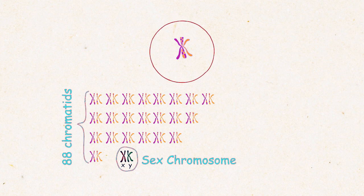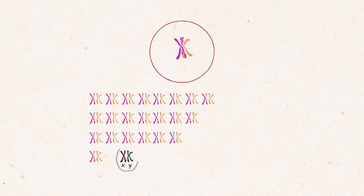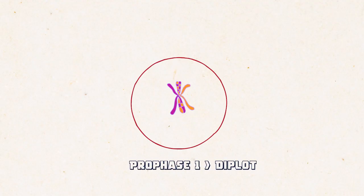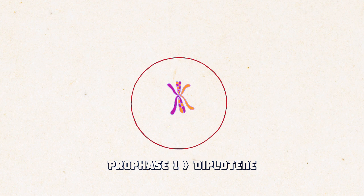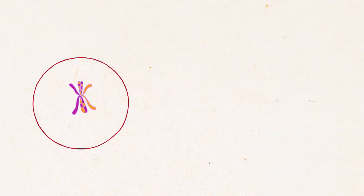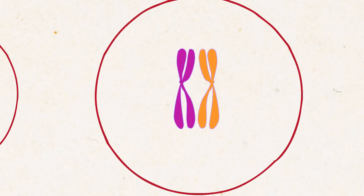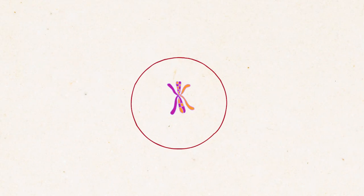If you are finding it difficult to understand then you can pause the video anytime and try to appreciate the numbers before you proceed any further. Now we have reached the meiosis 1 prophase 1 diplotene stage. In this stage synaptonemal complex disappears and the chromatids condense further. This stage can be lengthy in different species.